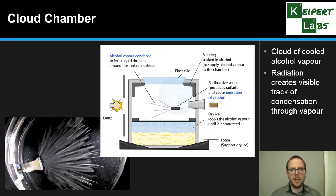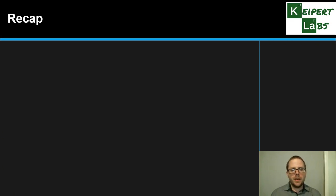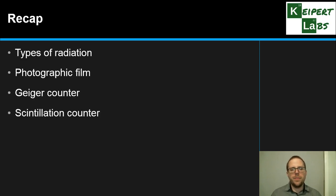We've identified or reminded ourselves of alpha, beta, and gamma radiation as particles and waves and how they behave, and then the four different techniques that we can use to detect this radiation: photographic film in the form of a radiation badge, the Geiger counter, scintillation counter, and the cloud chamber. Thanks very much for watching, bye for now.